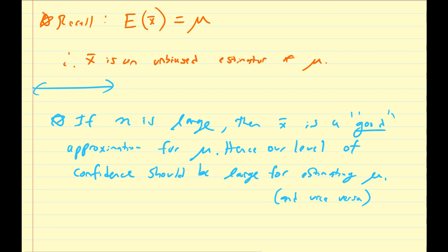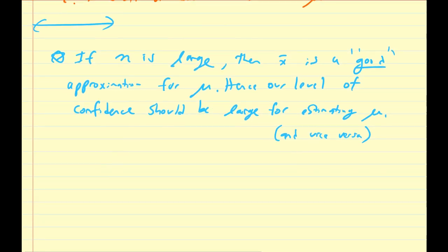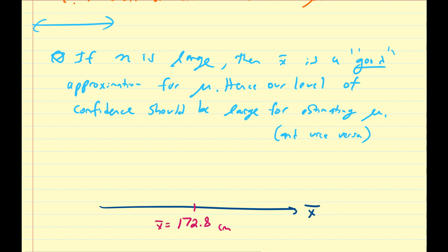So why not just choose a 100% confidence interval? Let's think about this. Let's assume this is all our possible values of x̄, and we get a possible x̄ value of, say, 172.8 cm. So this is our x̄ for a particular sample of heights. And let us assume n is large, n equals 1,279.